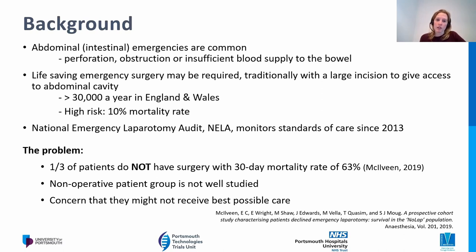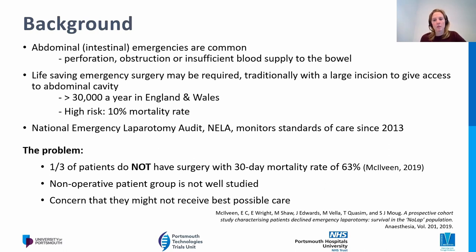The risks were recognised about 10 years ago when the National Emergency Laparotomy Audit — NELA — was founded. They've been monitoring standards of care for these patients: risk-stratifying patients and recommending, for example, that high-risk patients need both a consultant anaesthetist and a consultant surgeon in theatre, as well as an ICU bed afterwards. However, not all patients with an abdominal emergency actually end up having surgery. There was only one small study on about 300 patients, showing that about a third don't have surgery — and that group has a significantly higher mortality rate of over 60%.